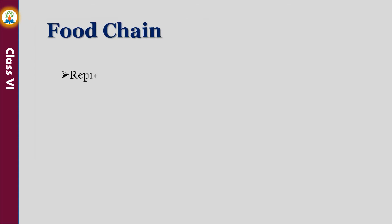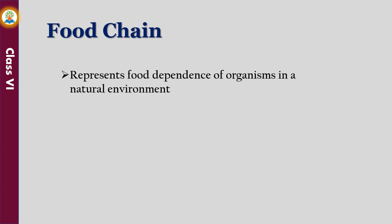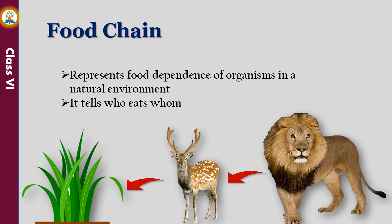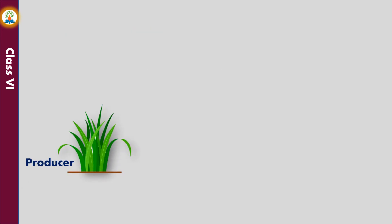A food chain represents the food dependence of organisms in a natural environment. It tells who eats whom. For example, grass is eaten by deer, and deer is eaten by lion. The organism at the first level of a food chain is always a producer, such as grass.